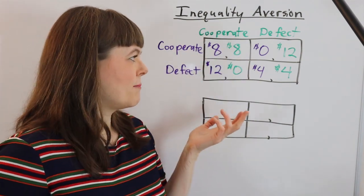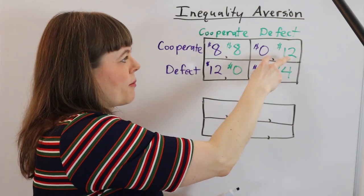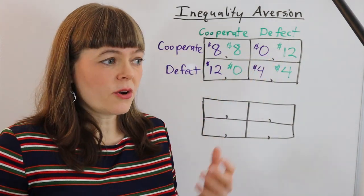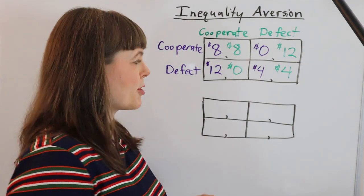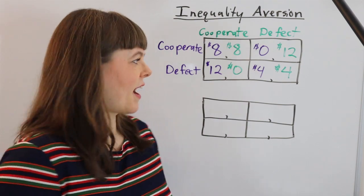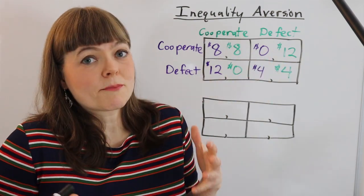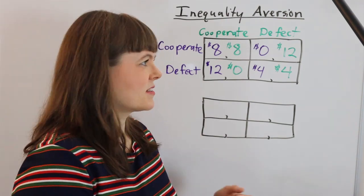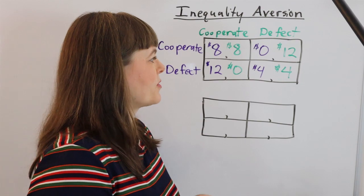One scenario might be that actually, these two outcomes where one person cooperates and the other defects could actually be uncomfortable. Maybe the participants in the experiment are going to give each other the stink eye if they end up in either of these, because then they know one person has a lot of money and the other doesn't. That creates disutility for both.